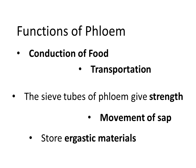The first and basic function of phloem is the conduction of food, like sugars and amino acids, from the leaf to the other parts of the plants. It also helps in the transportation of proteins and messenger RNAs. The sieve tube of phloem gives strength to the plant against bursting, and sieve plates allow continuous movement of sap through the sieve pores.